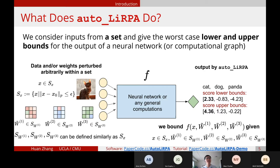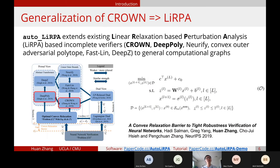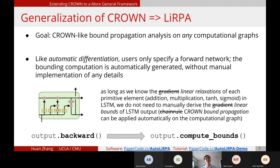That's basically the high-level goal this framework is trying to achieve. This library extends the existing linear relaxation-based perturbation analysis algorithms, which includes Crown and DeepPoly — the two algorithms are essentially the same. This framework implements DeepPoly for general computational graphs on PyTorch, and it is integrated into PyTorch so we can use it easily.